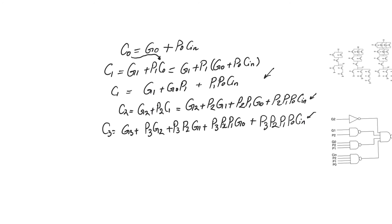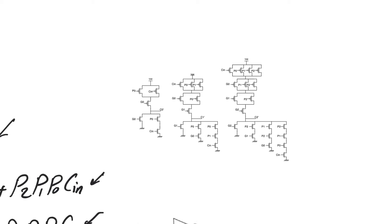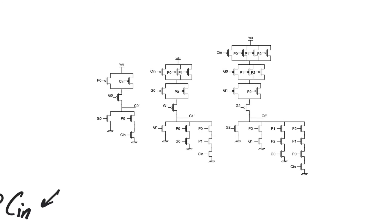If we look at static CMOS implementations of all these carry positions, then these are the static CMOS gates. Just by looking at the CMOS gate for C2 and comparing it to C0, we immediately notice that the delay for calculating C2 is going to be much larger than the delay for calculating C0.